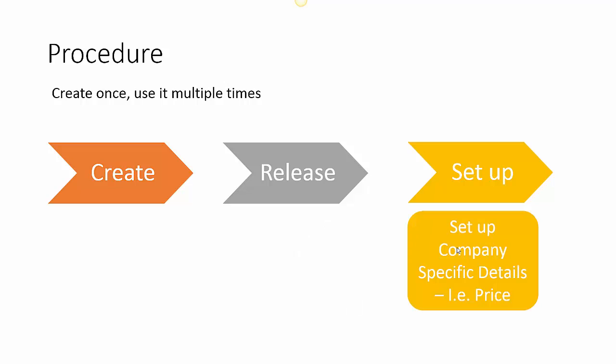The third and last step is to set up company-specific details for a released product. For example, pricing — there may be different prices in Europe and USA. There can be other things like default order settings. Let us review the product demonstration for the same.